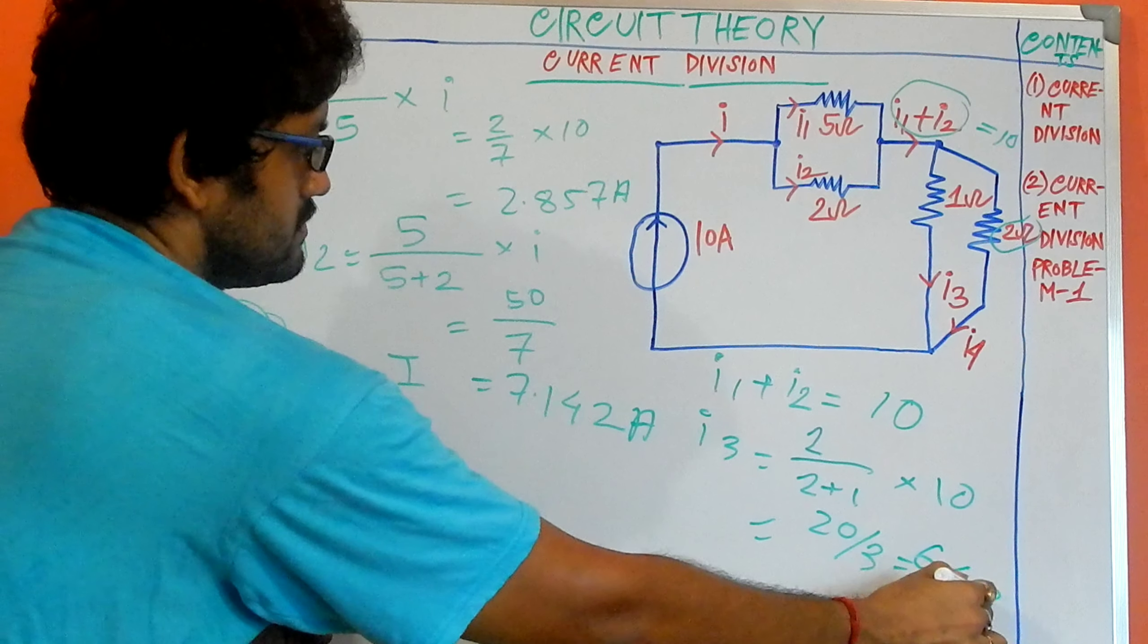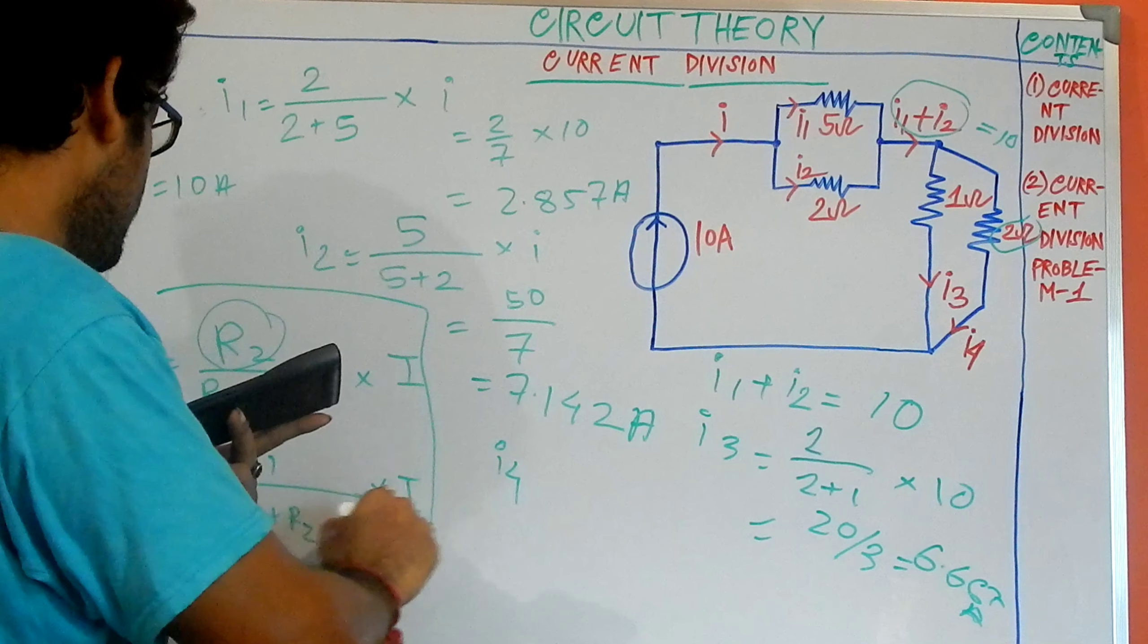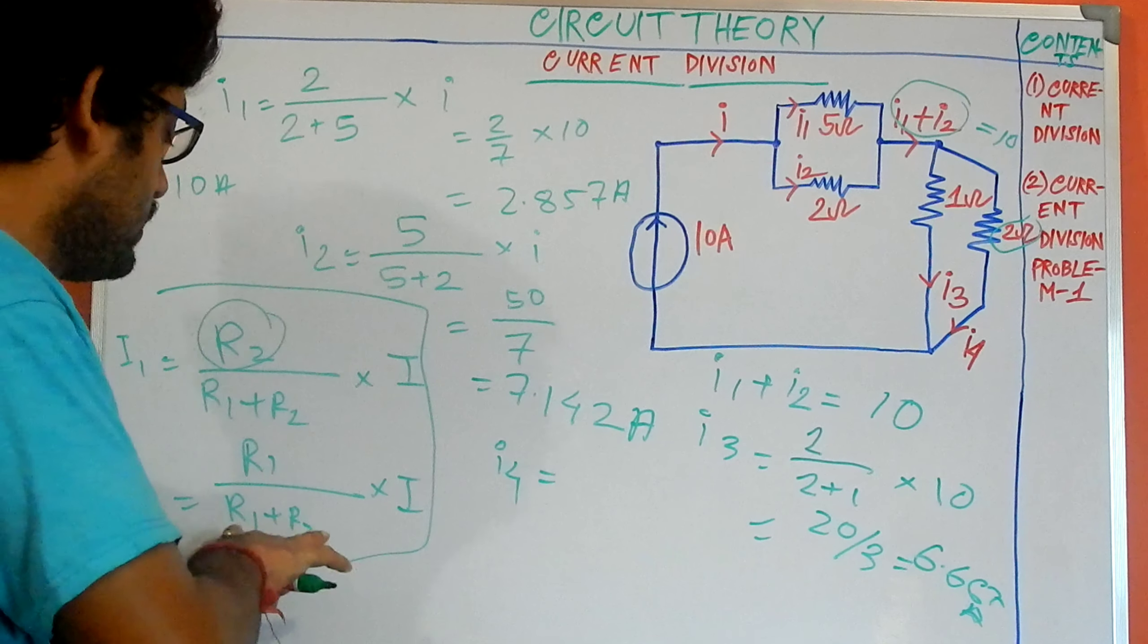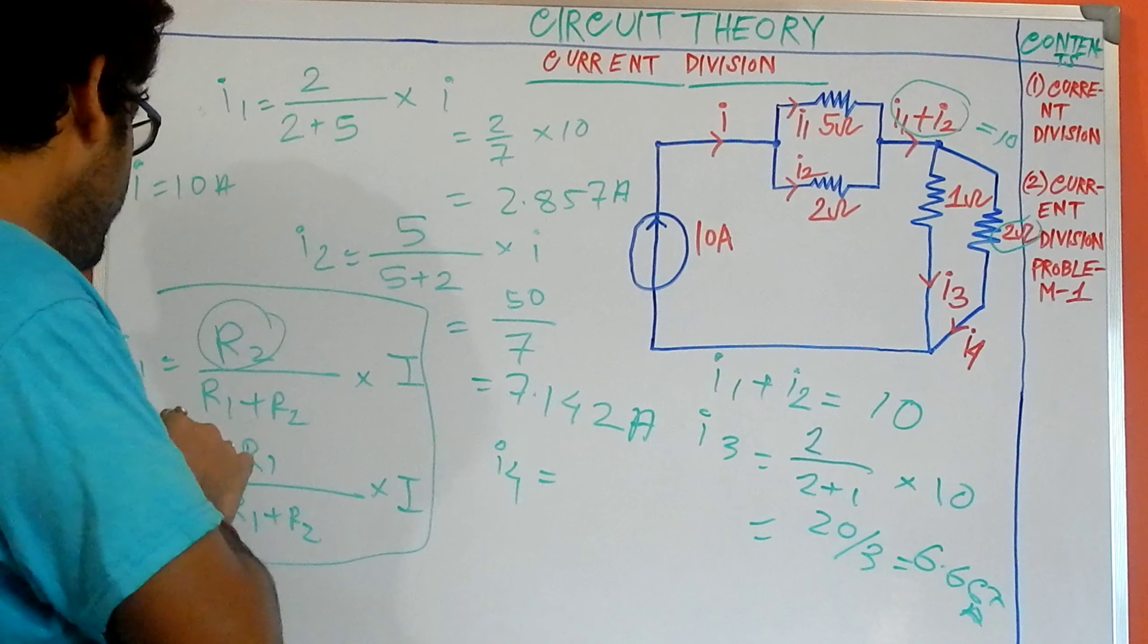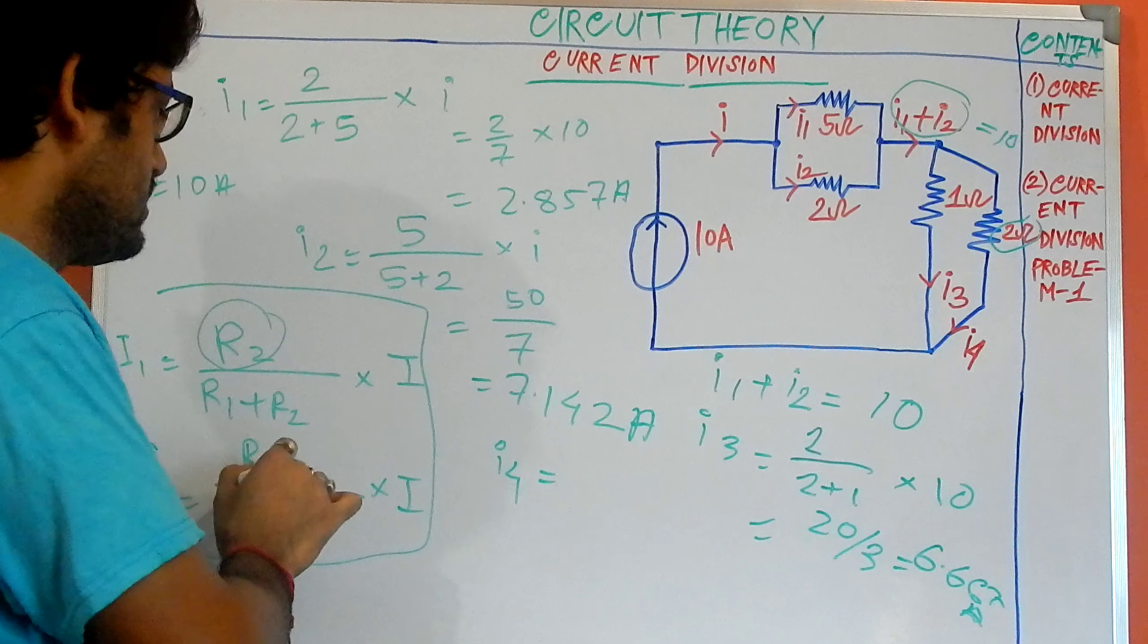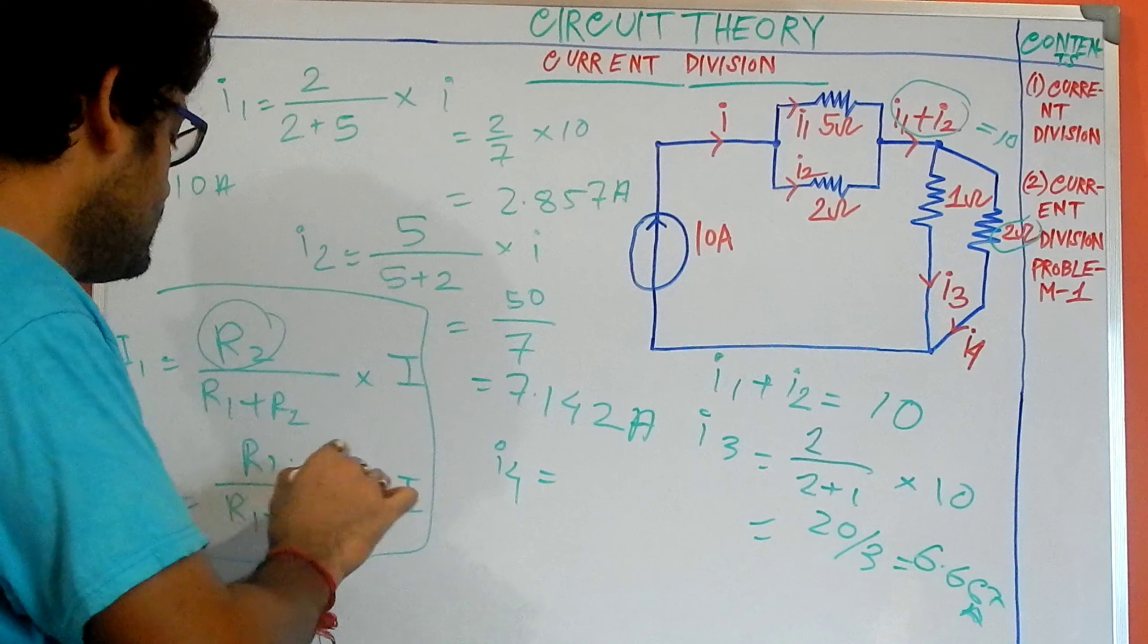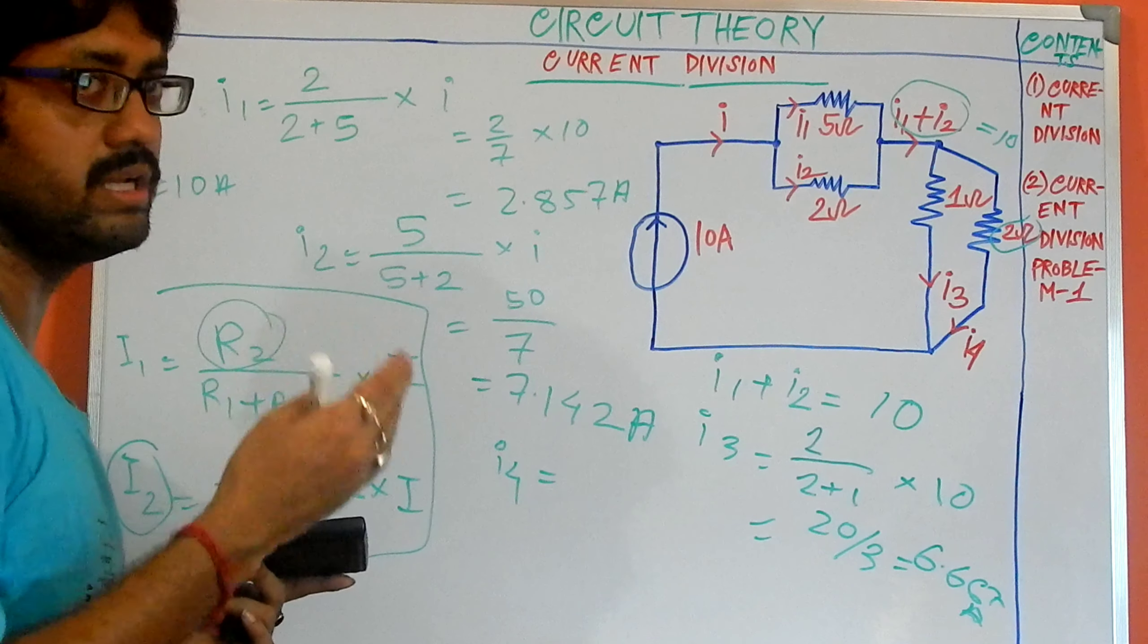And similarly I4, by using this current division formula. I want to remind you that in the lower part, for the current division rule, if the current path is I2, you should choose the opposite resistance that is located in a parallel way, and that factor is divided by total resistance and multiplied with I. This is the current division formula that I have shown in my previous video.